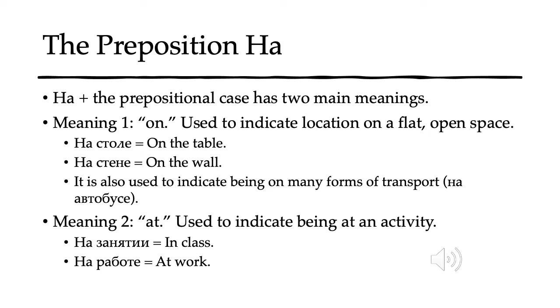That first meaning is used to indicate location on a flat open space. So we could say, for example, na stolje — on the table — or na stinje — on the wall.